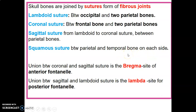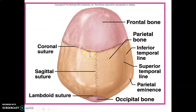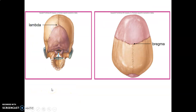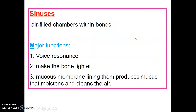Where the coronal and sagittal sutures meet is the bregma, which is the site of the anterior fontanelle. Where the sagittal and lambdoid sutures meet is the lambda, the location of the posterior fontanelle. The posterior fontanelle closes earlier than the anterior fontanelle in children.